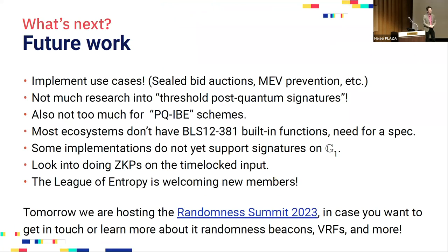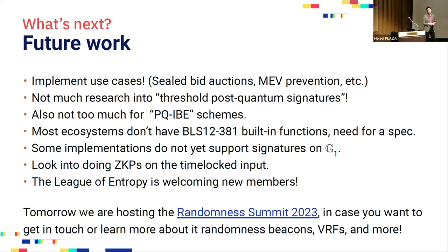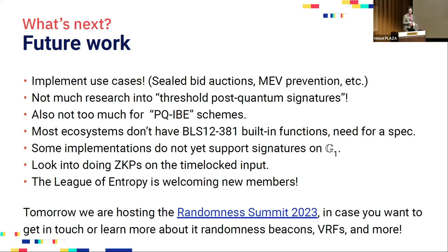What remains to be done? It might be nice to look into post-quantum threshold signatures and post-quantum IBE schemes, as there aren't too many practical things there yet. It would be cool to see actual applications using it for sealed bid auctions or MEV prevention. Zero-knowledge proofs on the content of time-locked ciphertexts would also be interesting. Sadly, there aren't too many implementations of BLS12-381, so maybe we need a hack spec to push adoption forward. But anyway, it's live, it works. We'll be hosting a randomness summit tomorrow with about 10 seats still available.